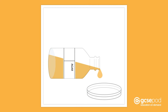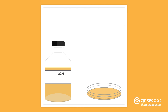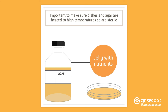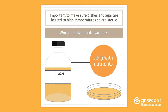First, agar dishes are made by pouring liquid agar onto petri dishes and letting them cool. Agar is a jelly that has had nutrients added to it that bacteria need to grow. It is important to make sure that the dishes and agar are heated to high temperatures so that they are sterile and have no microorganisms on their surface, as these would contaminate the bacterial samples being grown.